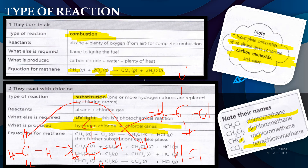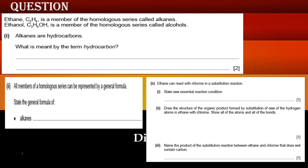You need to do the practice questions — copy them in your exercise book or print and write your answers. Ethane C2H6 is a member of the homologous series called alkanes. Ethanol C2H5OH is a member of the homologous series called alcohols. You should know the definition of hydrocarbon — it contains only hydrogen and carbon. All members of a homologous series can be represented by a general formula.